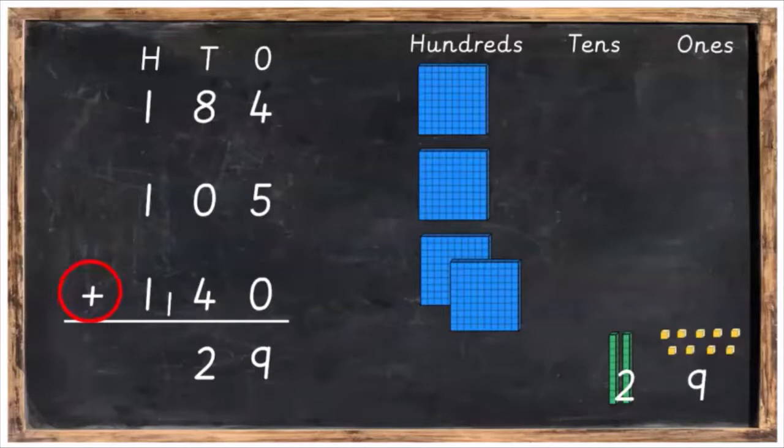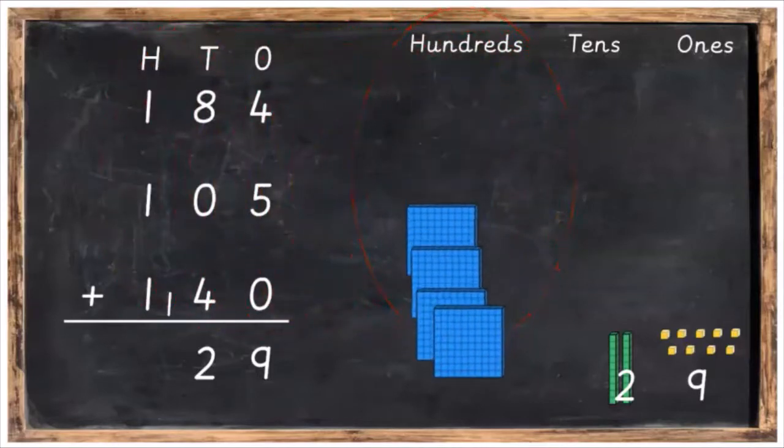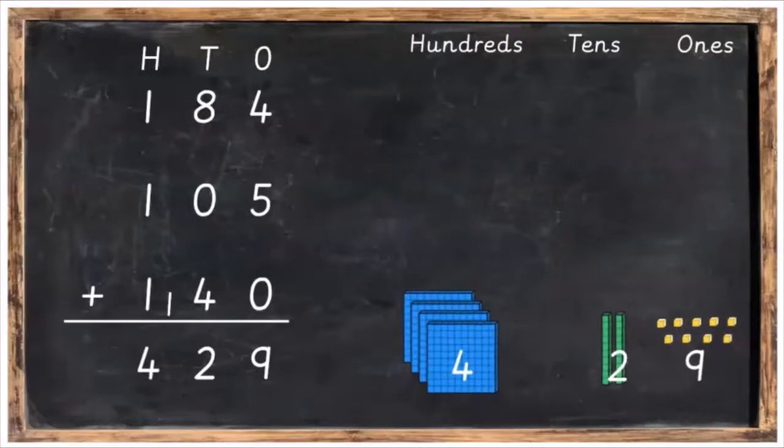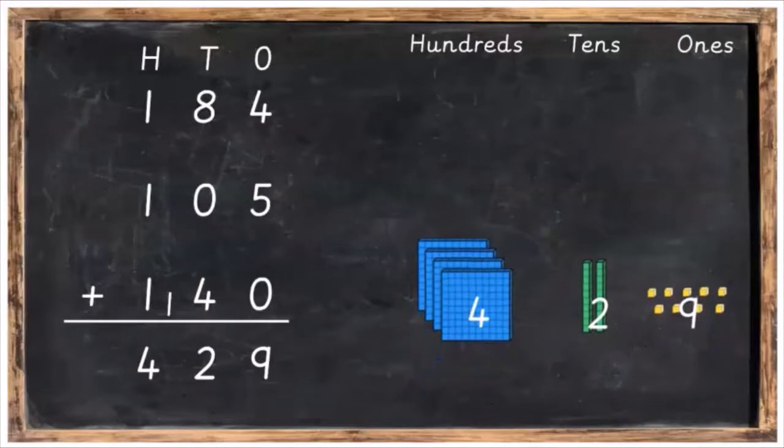And finally, we're going to add the hundreds. We're going to add one plus one plus one plus the one we carried over, which all together is equal to four. So we've got four hundreds now, and then go back over to your sum and fill that in. So our final answer is going to be 429.